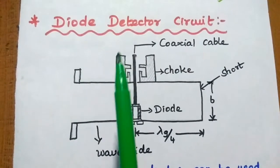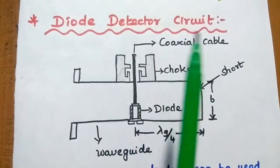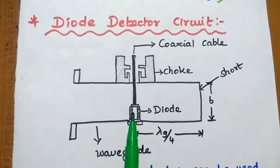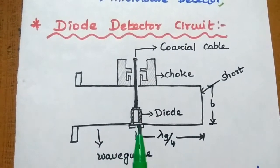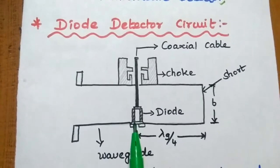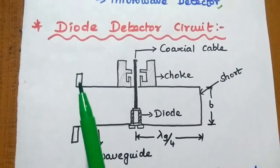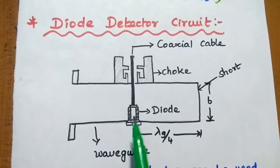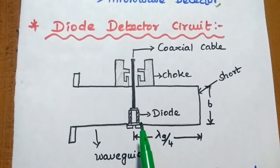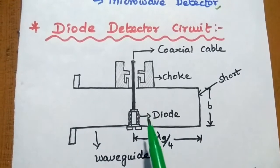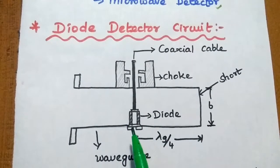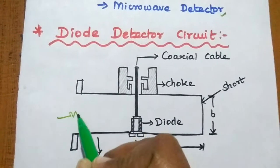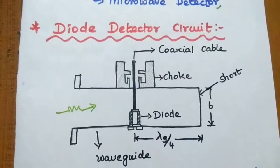So the first application is diode detector circuit. Schottky diode as well as crystal diode can be used in this diode detector circuit. So this is the waveguide. The diode is mounted inside that waveguide. Here the diode doesn't want any biasing. It starts working based on the incoming microwave signal energy.